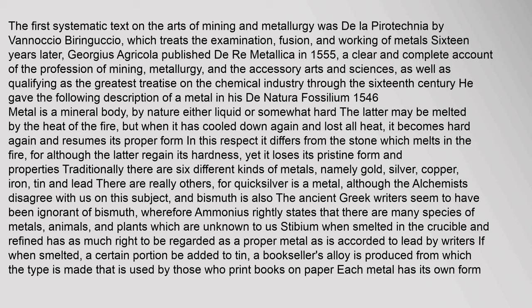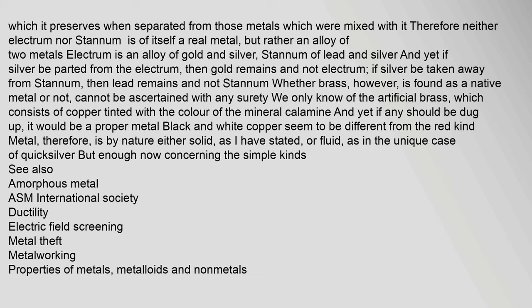Agricola gave the following description of a metal in his 'De Natura Fossilium' (1546): 'Metal is a mineral body, by nature either liquid or somewhat hard. The latter may be melted by the heat of fire, but when it has cooled down again and lost all heat, it becomes hard again and resumes its proper form — in this respect it differs from stone. Traditionally there are six kinds of metals: gold, silver, copper, iron, tin, and lead. There are really others, for quicksilver is a metal, and bismuth is also.' Each metal has its own form which it preserves when separated from mixed metals; therefore neither electrum nor stanum is itself a real metal, but rather an alloy — electrum of gold and silver, stanum of lead and silver.